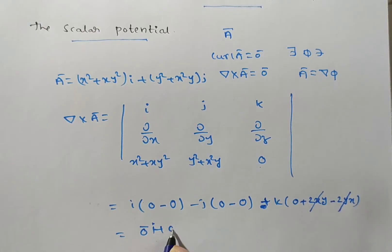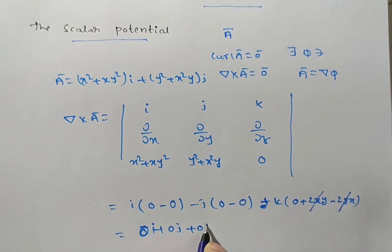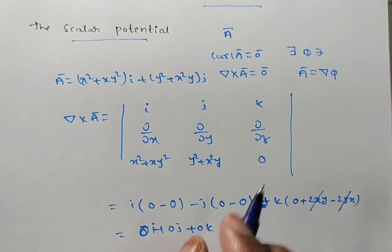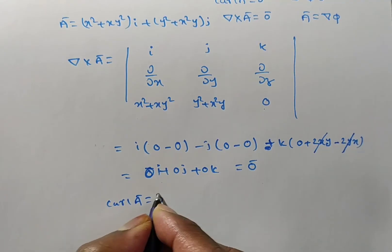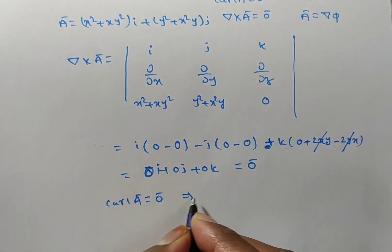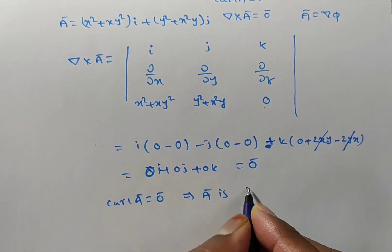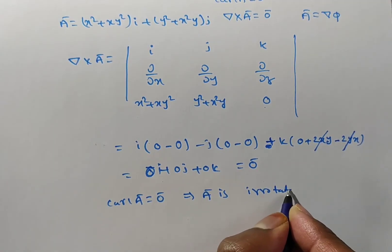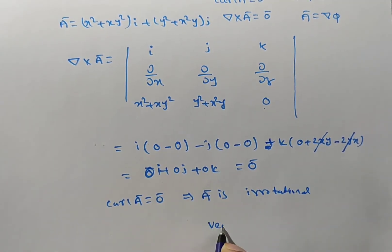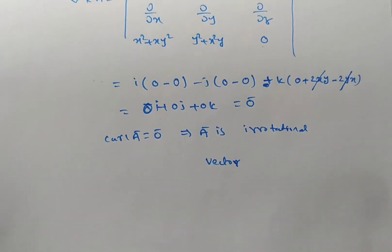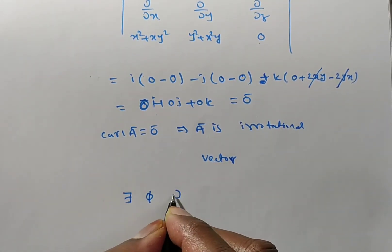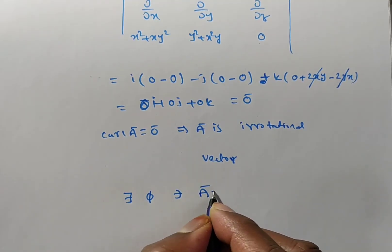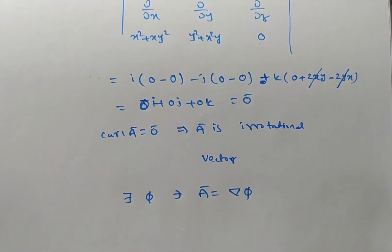Therefore, del cross A bar equals 0i + 0j + 0k, which equals 0 bar. So curl A bar equals 0 bar, which proves the given vector A bar is an irrotational vector. Since it is irrotational, there exists a scalar potential function φ such that A bar equals del φ.